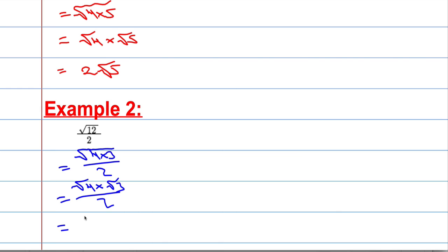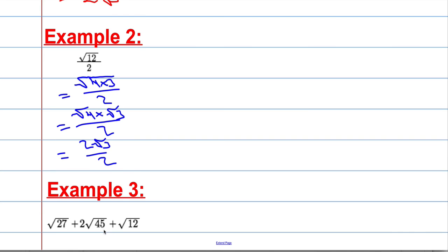Which is going to equal root 4 times root 3, all over 2. And root 4 is 2, so we get 2 root 3 over 2. And then the last part — I can divide the top and bottom by 2, so I end up getting that the answer is simply just root 3.